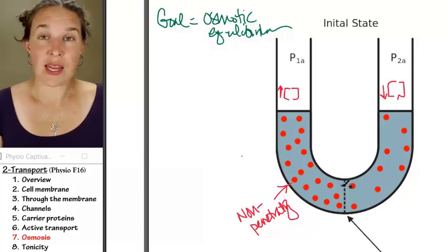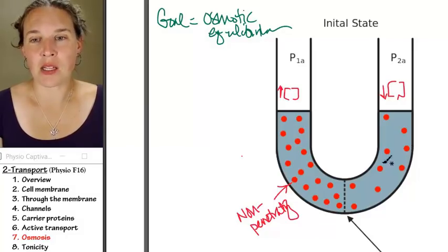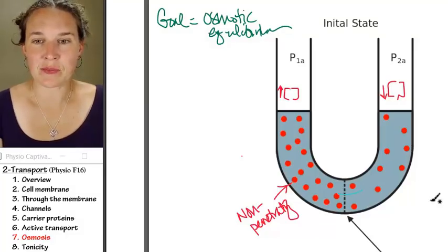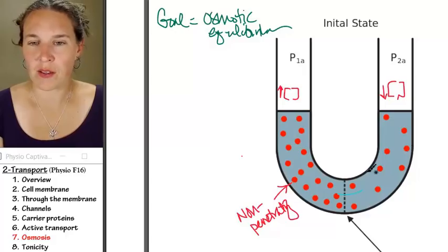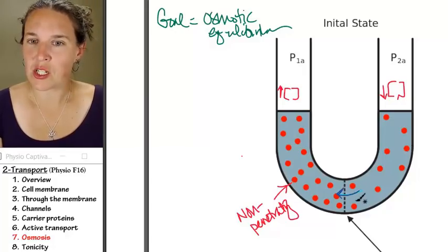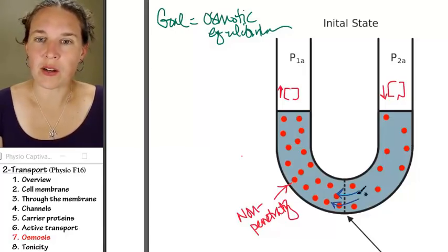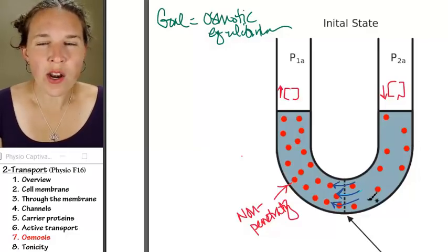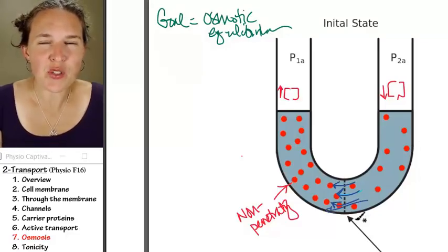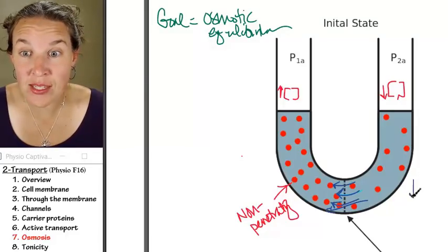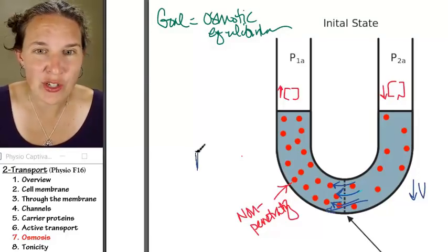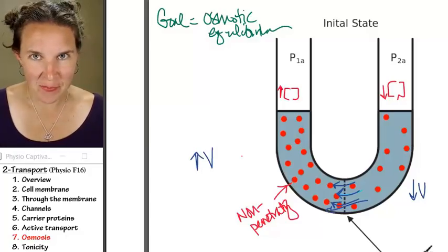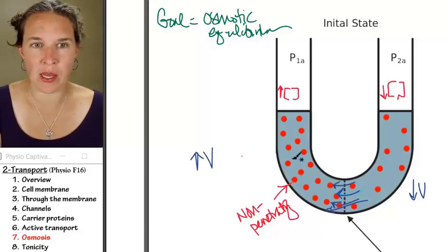Osmosis is going to happen. If water molecules can get through that semipermeable membrane, they're going to move until osmotic equilibrium is reached. What do you think is going to happen with the water molecules in this scenario? Particles can't move to change the concentration, but water molecules can.